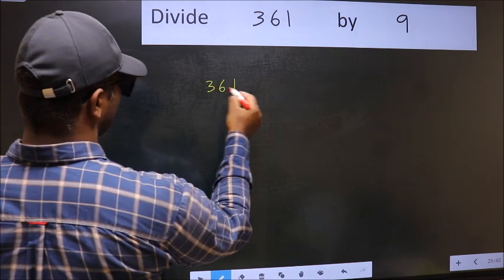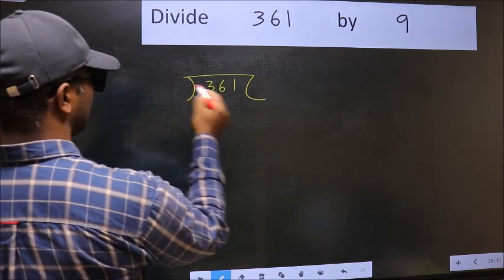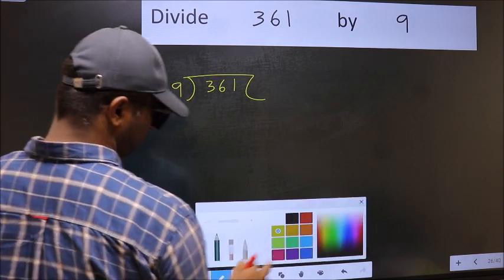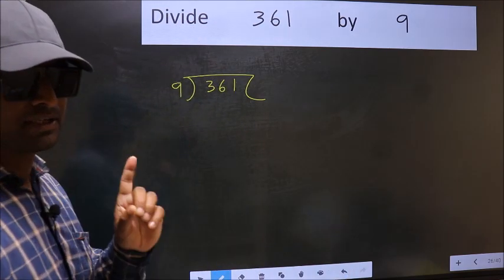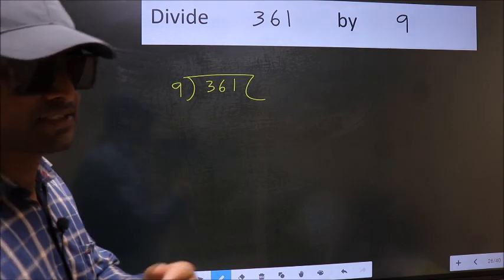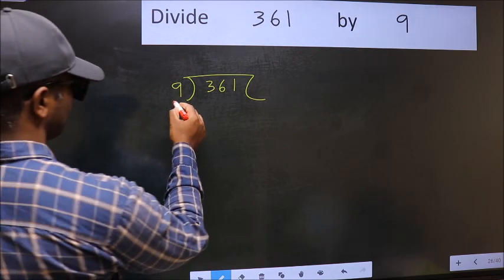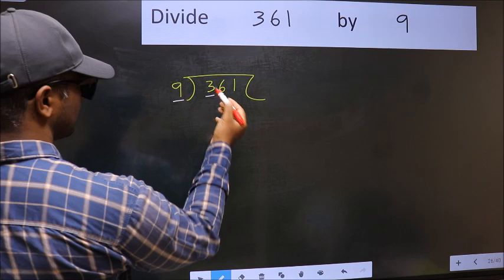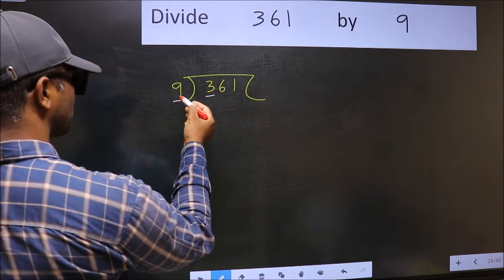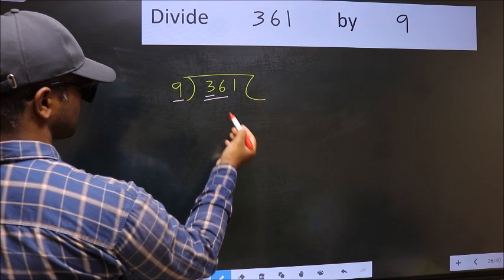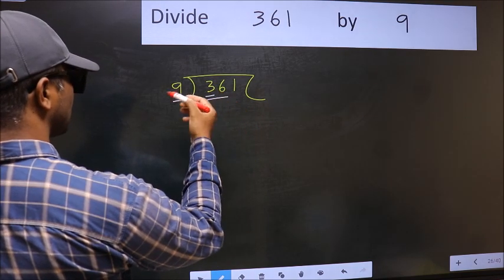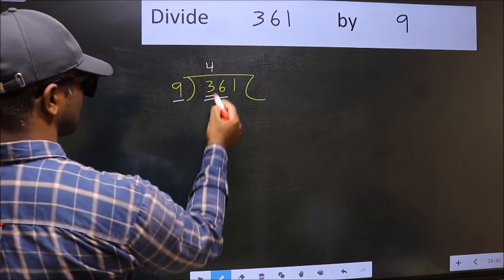361 and 9 here. This is your step 1. Next, here we have 9 and here 3. 3 is smaller than 9, so we should take two numbers, 36. When do we get 36 in 9 table? 9 times 4 is 36.